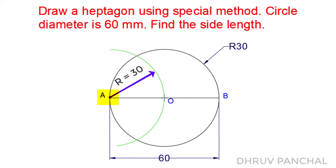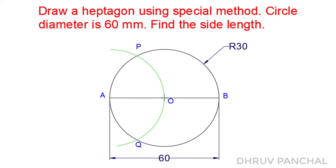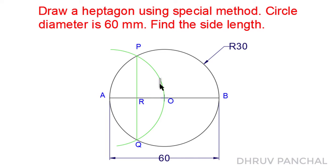From point A as center, draw an arc of the same radius and mark the intersecting points as point P and point Q. Join point P with point Q and mark the intersecting point of lines AB and PQ as point R. Now measure the length of line PR, which will be used as the side length to draw the heptagon.